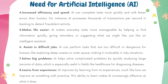AI makes everyday tasks more manageable by helping us find information quickly, giving reminders, or suggesting what we might like, just like an intelligent assistant. AI can also perform tasks that are too difficult or dangerous for humans, like exploring deep oceans or outer space, making it invaluable in risky situations. AI helps solve complicated problems by quickly analyzing large amounts of data, which is especially useful in fields like healthcare for diagnosing diseases. AI improves by learning from its experiences, much like how we improve at something with practice. This ability to learn makes AI increasingly effective at what it does.